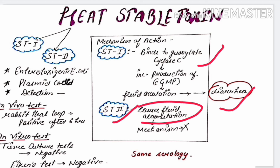The heat-stable toxin is possessed by enterotoxigenic E. coli and is also plasmid-coded. It can be detected in vivo and in vitro. The serology method is the same as for the heat-labile toxin.